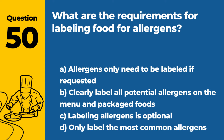Question 50. What are the requirements for labeling food for allergens? a. Allergens only need to be labeled if requested. b. Clearly label all potential allergens on the menu and packaged foods. c. Labeling allergens is optional. d. Only label the most common allergens. Answer b. Clearly label all potential allergens on the menu and packaged foods. It's required to clearly label all potential allergens on both the menu and packaged foods to inform and protect customers with allergies.